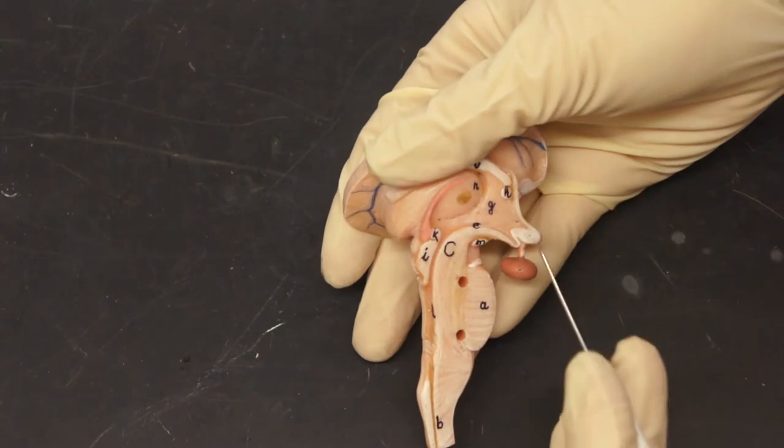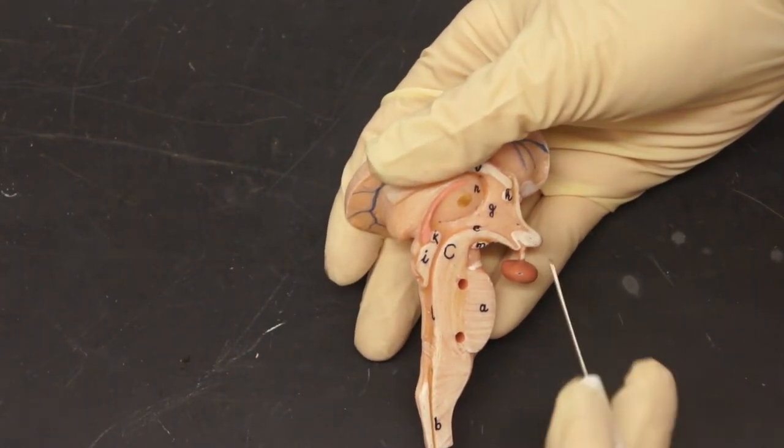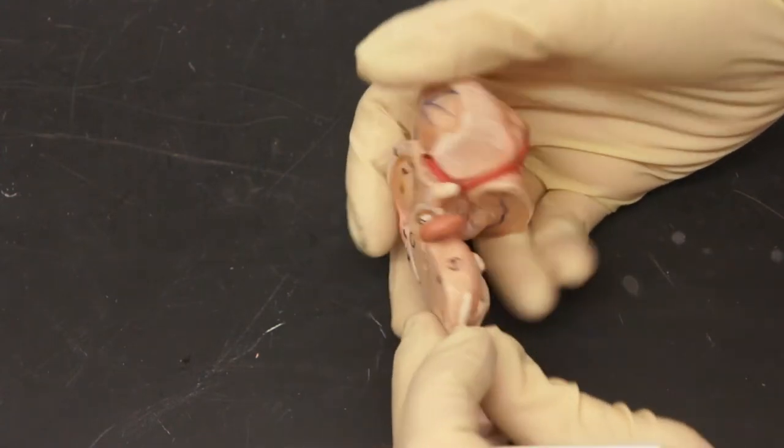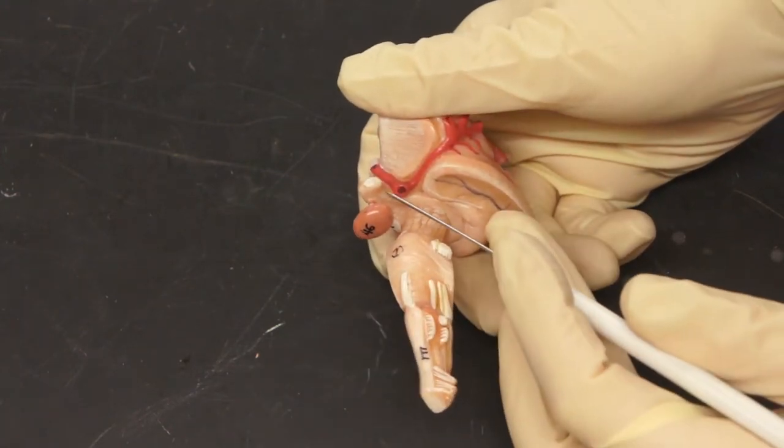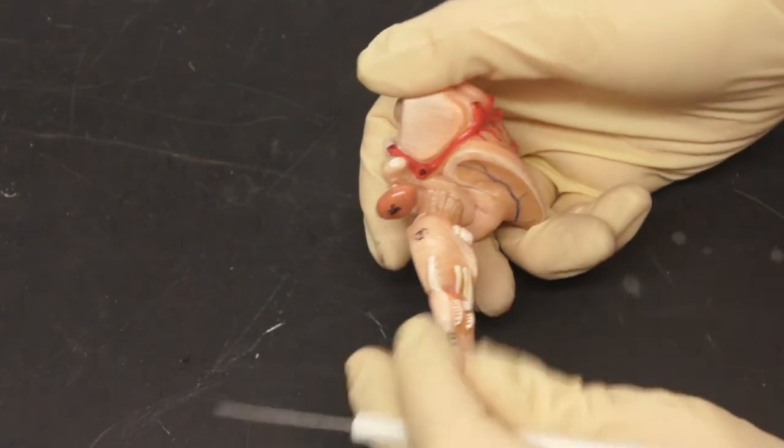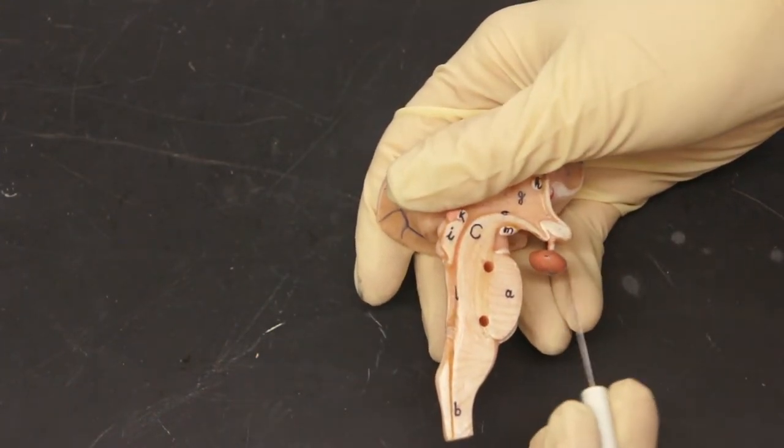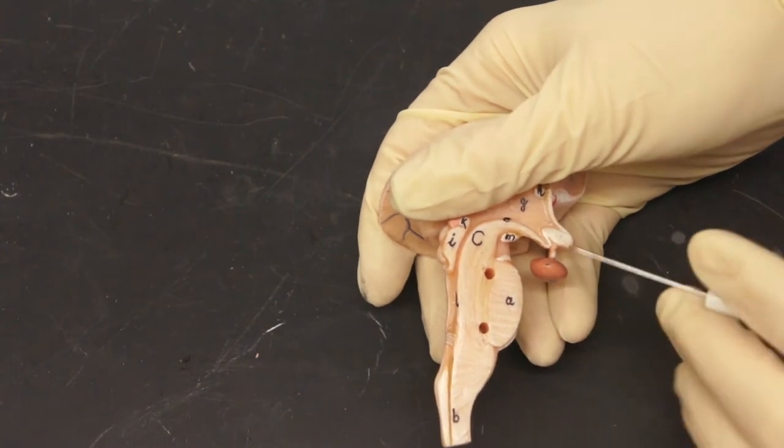We have the optic chiasm here, for which the optic nerve comes this way. Around here, we have the optic tract. And then out in the front, we have the pituitary gland attached by the infundibulum.